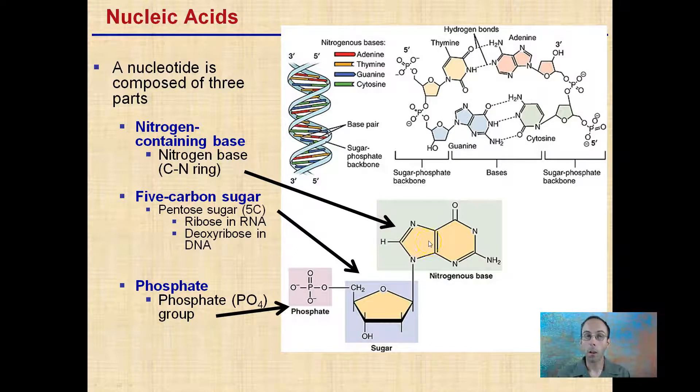So one of the components of our nucleic acids is our nitrogen-containing base that is linked to a five-carbon sugar, which is called a pentose sugar. And this is ribose in RNA, which stands for ribonucleic acid. And this sugar would be a deoxyribose in DNA. And we'll see a comparison between those two in a moment.